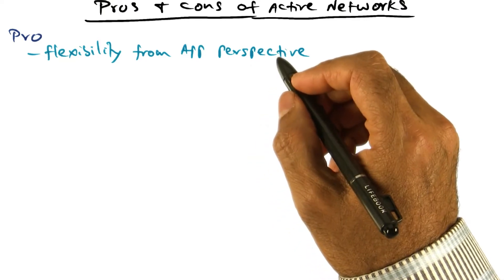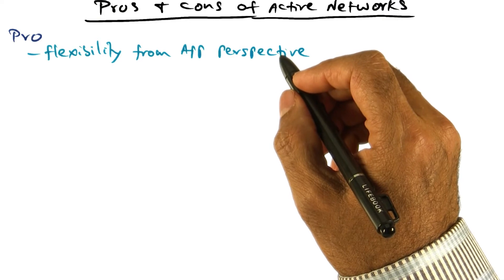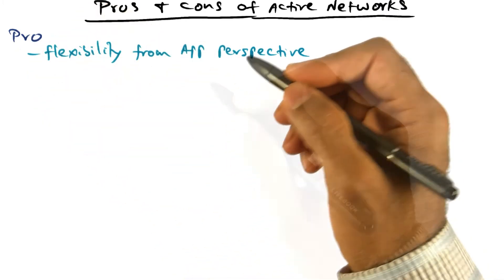So having talked about the vision and the practical implementation details of active networks, let's talk about the pros and cons.